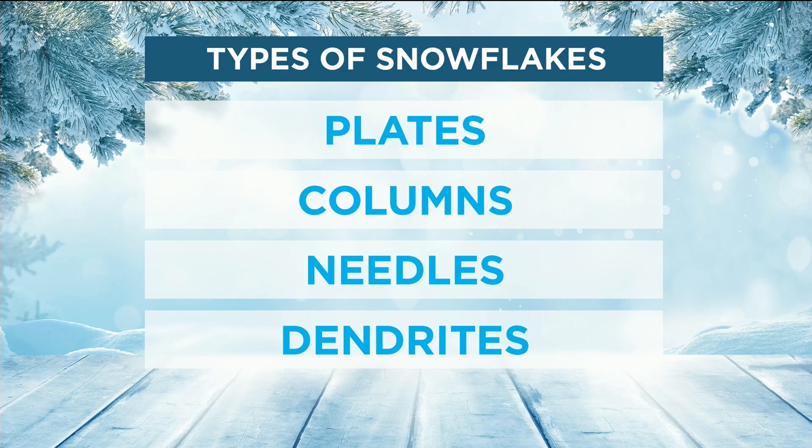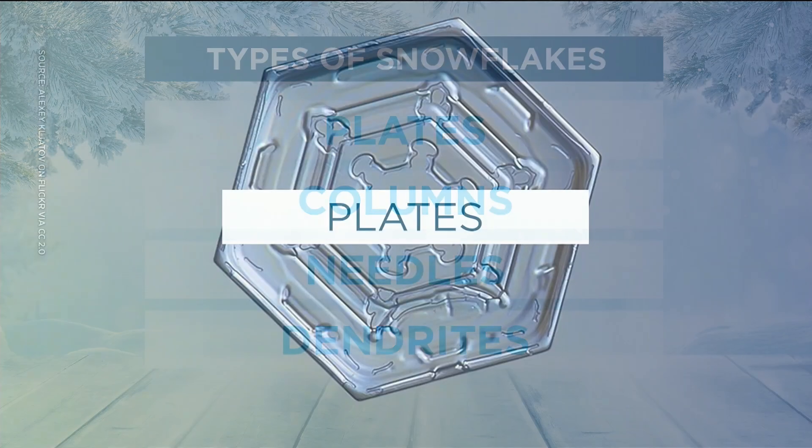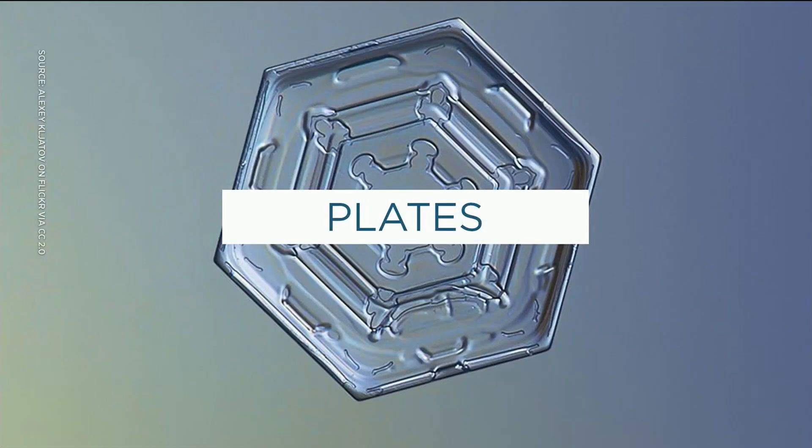We'll go into plates first. These are what plates look like — just flat like this. This would happen in two sets of conditions: either very, very cold temperatures or just below freezing. They're light and flat, they've got six sides, and they're the most common type of snowflake.